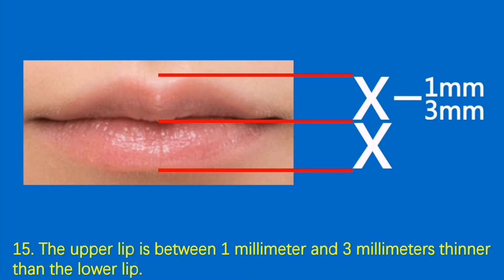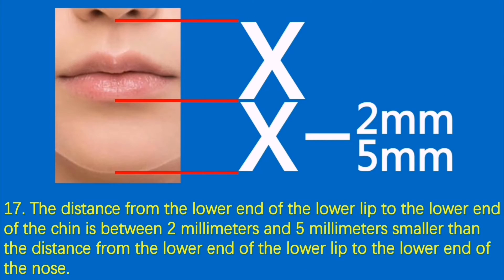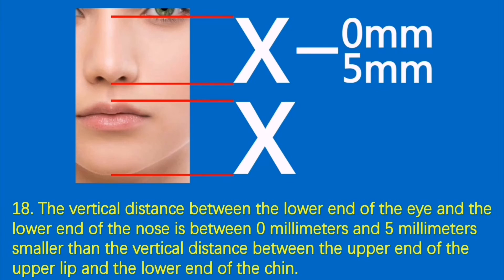Condition 15: The upper lip is between 1 millimeter and 3 millimeters thinner than the lower lip. Condition 16: The vertical distance between the lower end of the nose and the upper end of the upper lip is between 1 millimeter and 2 millimeters larger than the thickness of the lower lip. Condition 17: The distance from the lower end of the lower lip to the lower end of the chin is between 2 millimeters and 5 millimeters smaller than the distance from the lower end of the lower lip to the lower end of the nose. Condition 18: The vertical distance between the lower end of the eye and the lower end of the nose is between 0 millimeters and 5 millimeters smaller than the vertical distance between the upper end of the upper lip and the lower end of the chin.